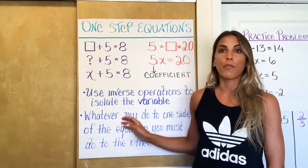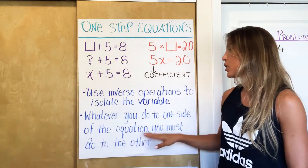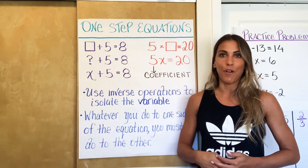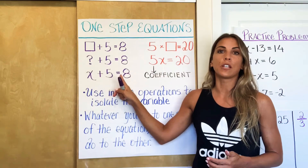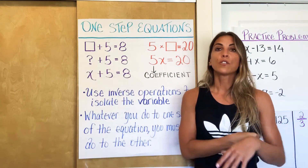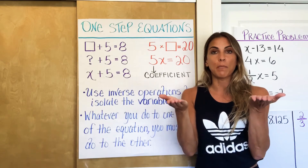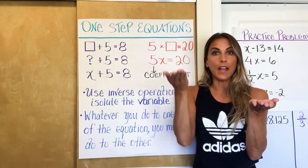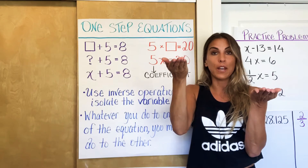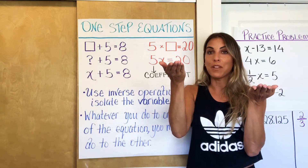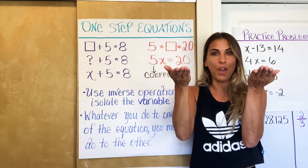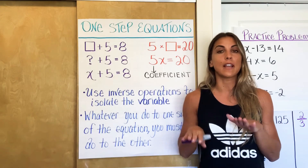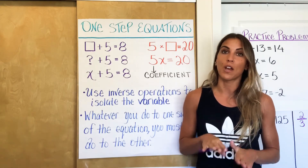The second important rule — maybe write this down — is that whatever you do to one side of the equation, you must do to the other. An equation with an equal sign tells me two things are equal. If I have $5 in my left hand and $5 in my right hand, they're equal. But if I add a dollar to one hand, now I have six on one side and five on the other — they're no longer equal. To make them equal again, I do the same thing to the other side. I add one there too, and now both have six.